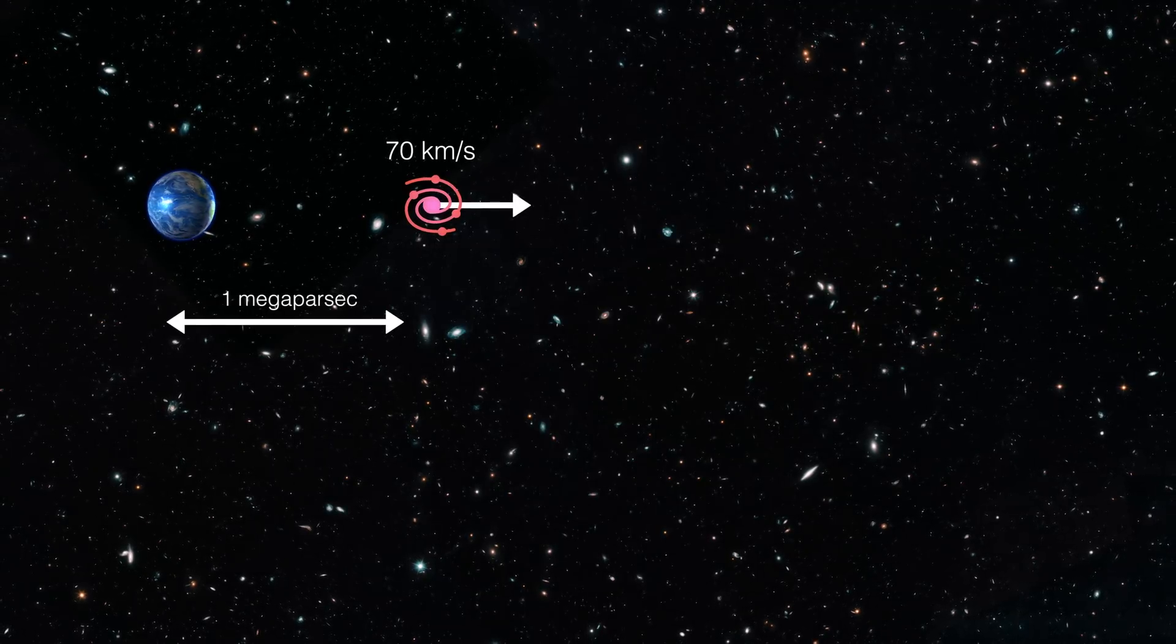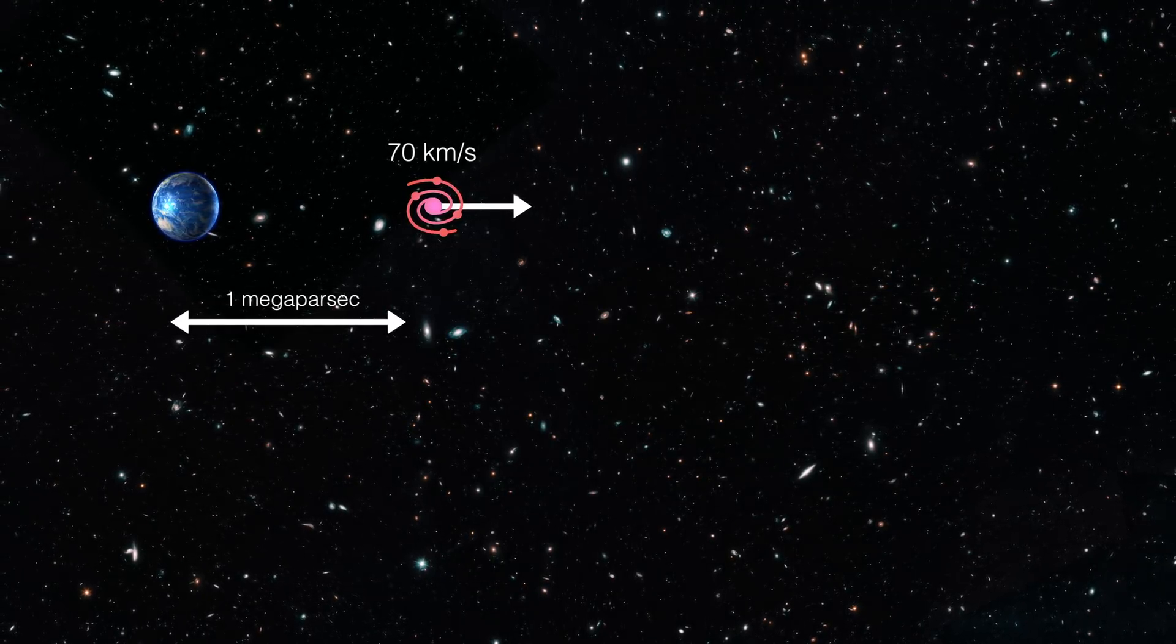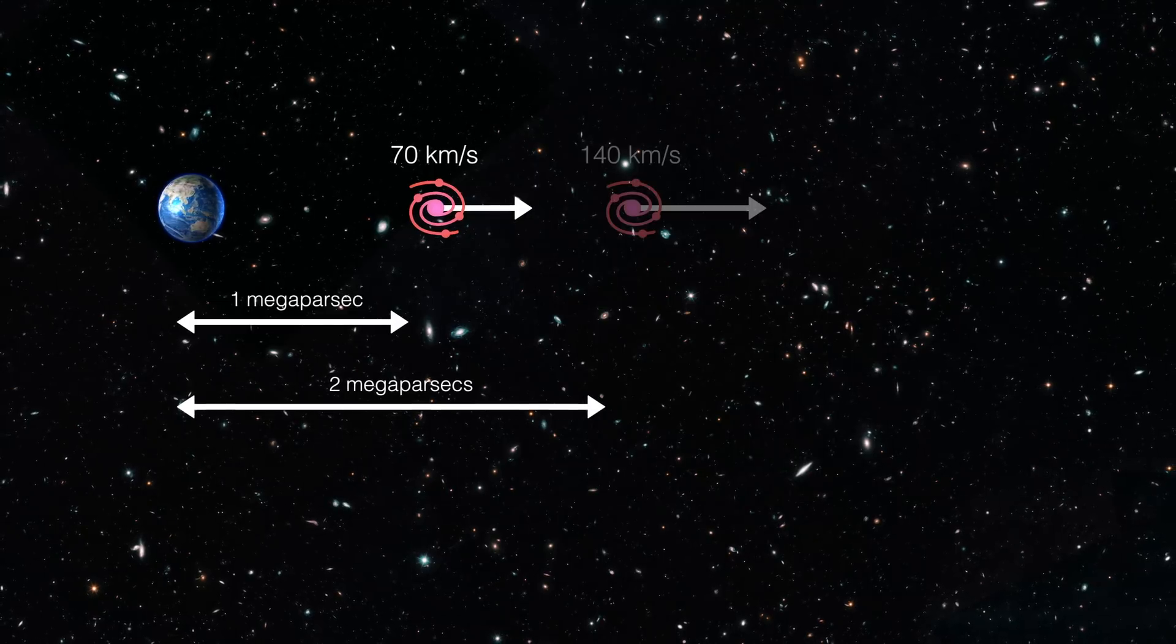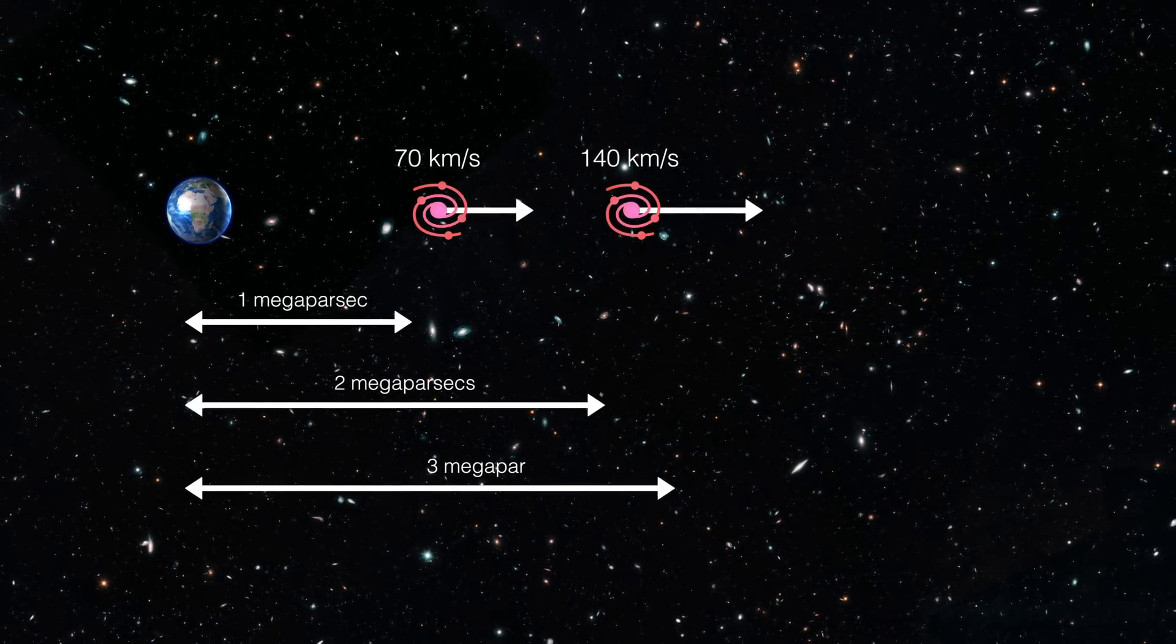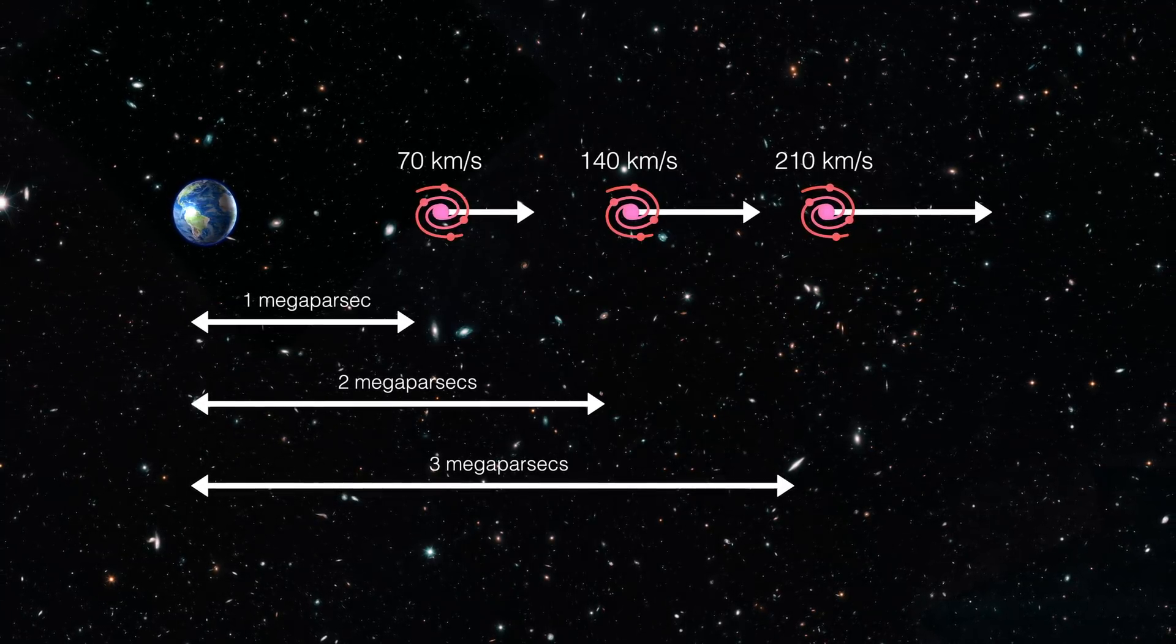So a galaxy one megaparsec away from us is, on average, moving away from us at 70 kilometers per second. A galaxy two megaparsecs away is moving at 140 kilometers per second. Three megaparsecs means 210 kilometers per second and so on.